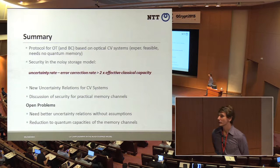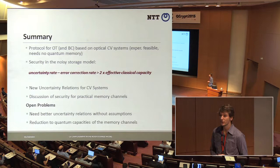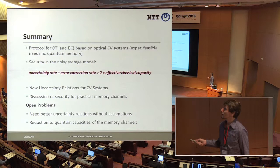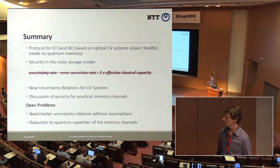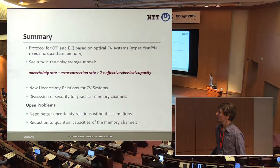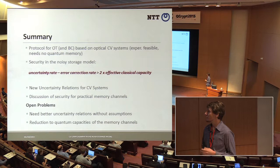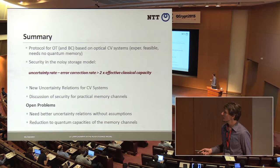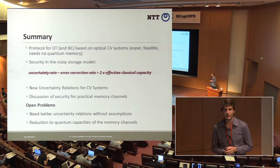To summarize: I showed a protocol for optical continuous variable implementation of oblivious transfer, and we also have a protocol and security analysis for bit commitment — which is actually simpler because it doesn't use error correction. The take-home message is that we need a high uncertainty rate and a low error correction rate, and that difference must exceed the effective classical capacity. We showed new uncertainty relations, though we learned they are very difficult, and there remain open questions. We cannot get better security without further assumptions, likely for only technical reasons. Another open problem is to relate security to the quantum capacity of the channel rather than the classical capacity.